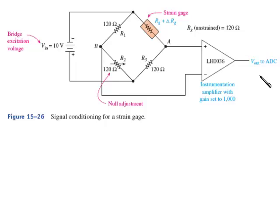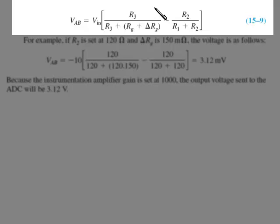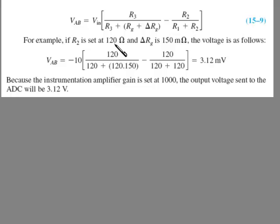Equation 15-9 looks a little complicated, but it's really not that bad. So you have the voltage at A to B is equal to whatever the input excitation voltage was times the series of resistance calculations and subtractions. And so if we were, for example, at 120 ohms, and when you added the weight, you got 150 milliohms of change. Here's the calculation you would use, and you'd get 3.12 millivolts out at point A to B. But that goes into an instrumentation amp with a gain of 1,000, so you'd end up with a voltage of about 3.12 volts going into the ADC for that particular strain.